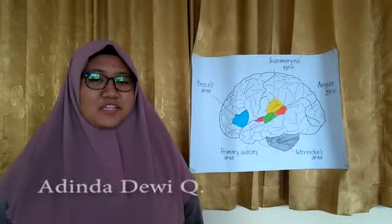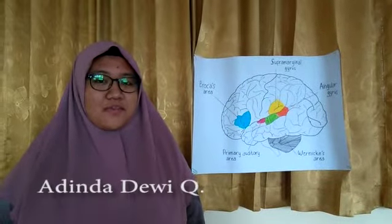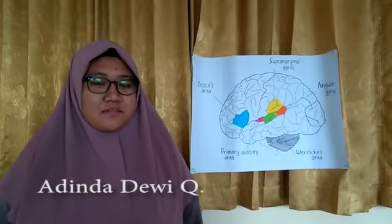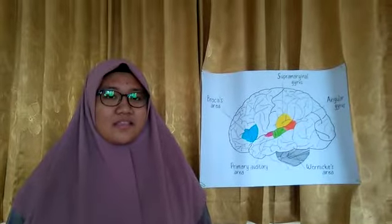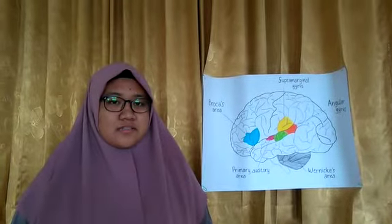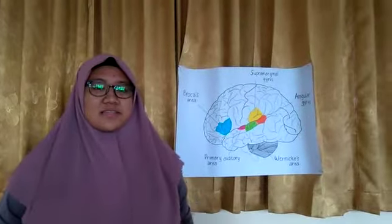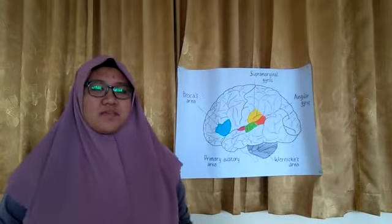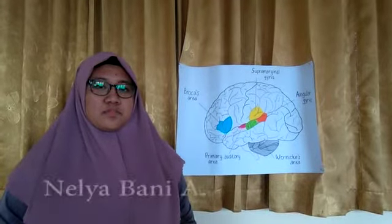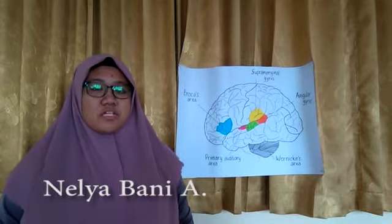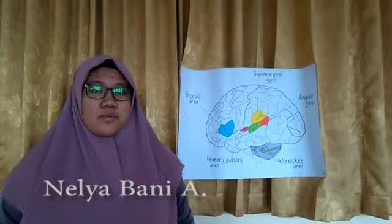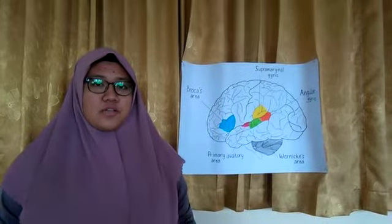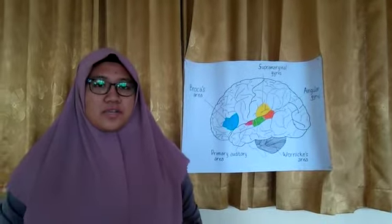In the explanation above, there are three main parts of the language center: focus area, focus area, and angular accuracy. This part is very important to produce language. If there is a malfunction of one of these systems, a human cannot produce language well.